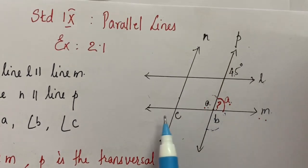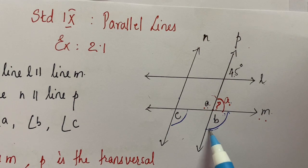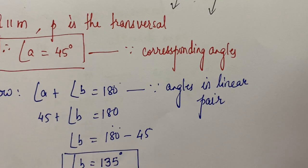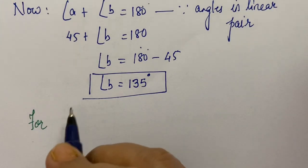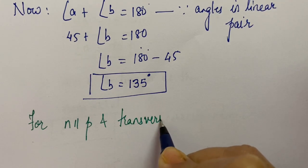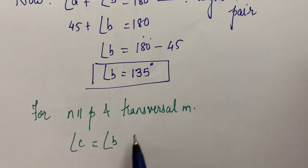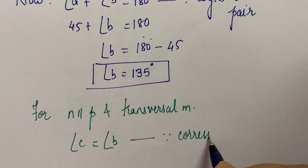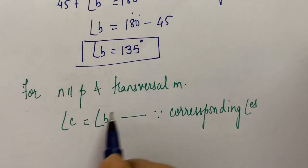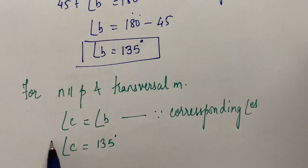Line N is parallel to line P. For N parallel to P with transversal M, angle C and angle B are corresponding angles, so their measures will be the same. Angle C is equal to angle B. Reason: corresponding angles. Since angle B is 135°, angle C is also equal to 135 degrees.